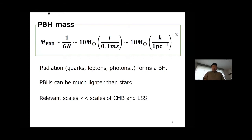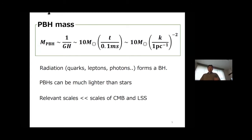One of the interesting characteristics of primordial black holes is that their mass can be much lighter than a solar mass, which is impossible for usual astrophysical black holes. By simply changing the comoving scale of the perturbations, we can realize much lighter primordial black holes. As is clear from this equation, the relevant scale for PBH formation is typically much smaller than the scale of the CMB and large-scale structure.